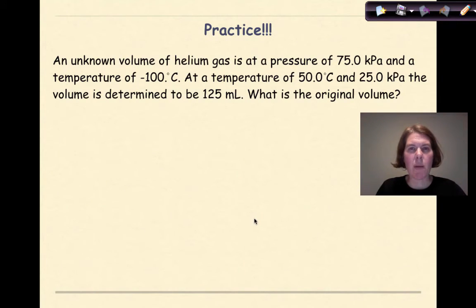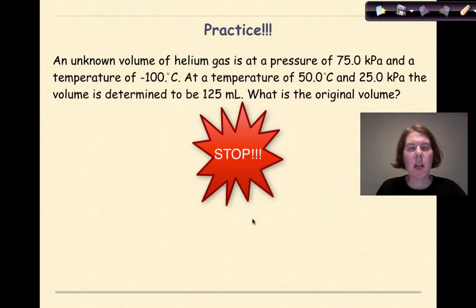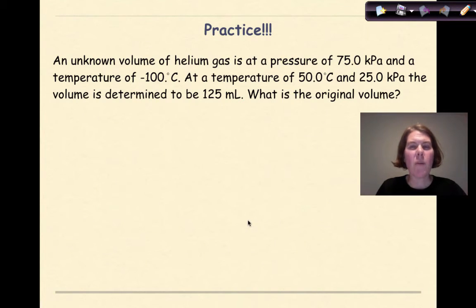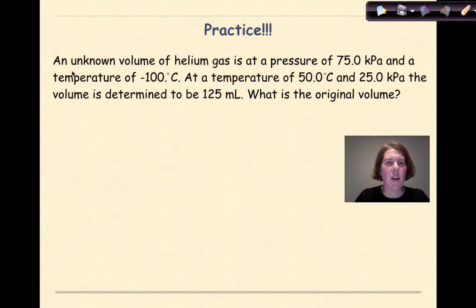Let's try another practice problem. So again I'd like you to stop, see if you can list all the variables, find the variable that you're solving for, plug it into your formula, and figure out your unknown. Welcome back. Let's see how you did. An unknown volume of helium gas is at a pressure of 75 kPa and a temperature of negative 100 degrees Celsius. At a temperature of 50 degrees Celsius and 25 kPa, the volume is determined to be 125 milliliters. What is the original volume?